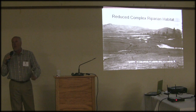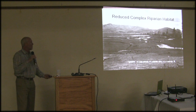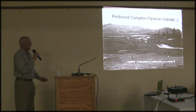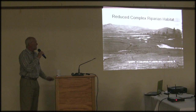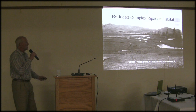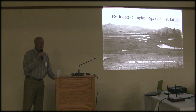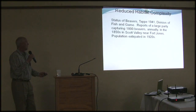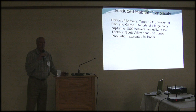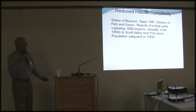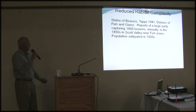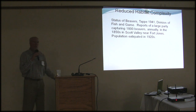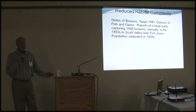Exacerbating these water temperature and water quality effects has been the reduction in complex riparian habitats. This is not only affecting temperature by reducing shading, but also reducing the amount of habitat structure and complexity that coho prefer. The large proliferation of beavers that once existed in the valleys was all but extinct by the 1920s — a DFG report shows 1,800 beavers being captured annually in the 1850s, and they were all but extirpated by the 1920s.